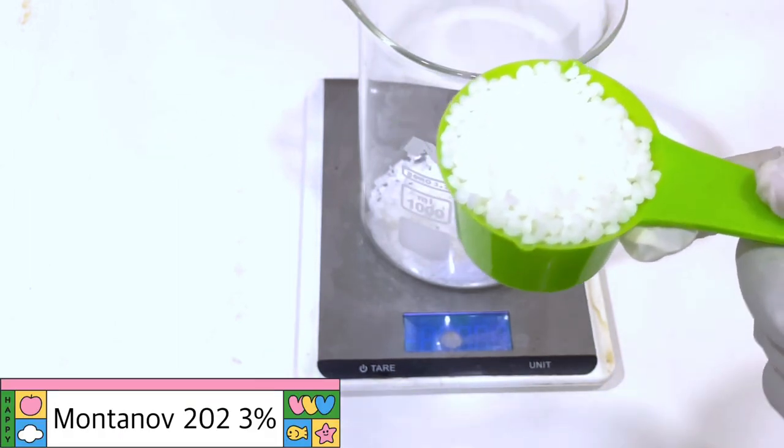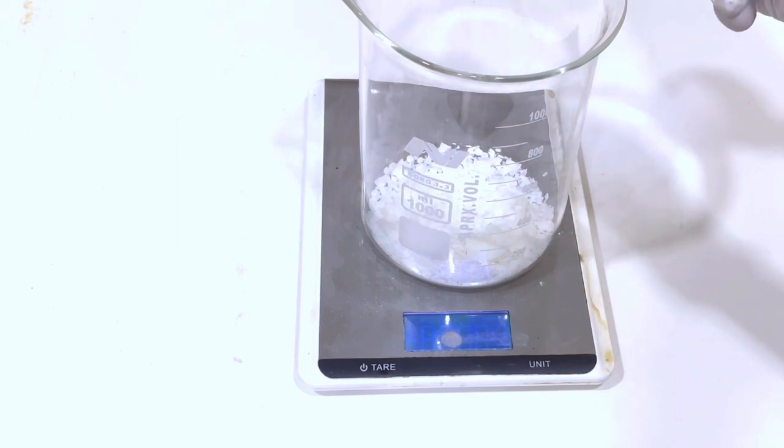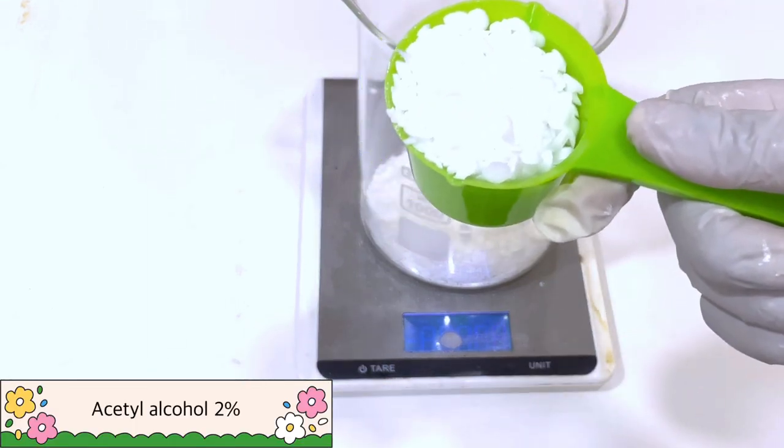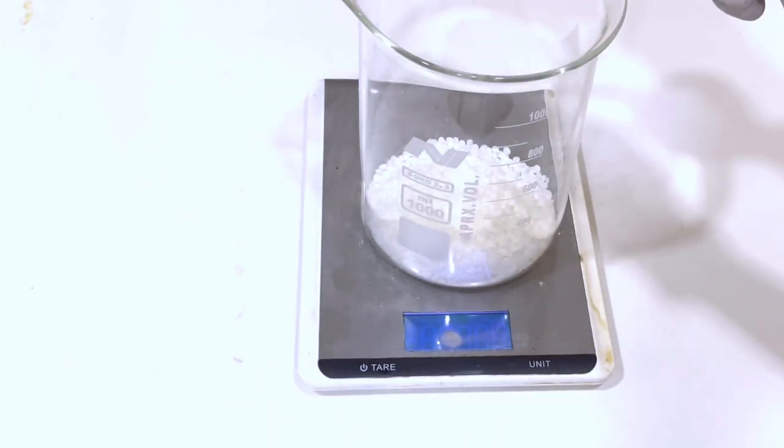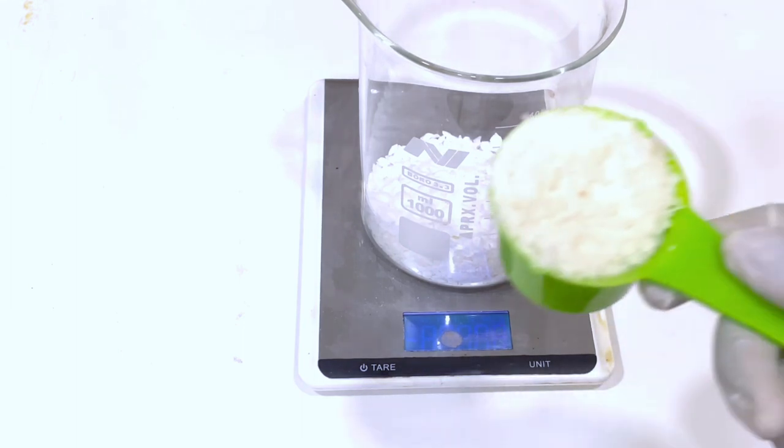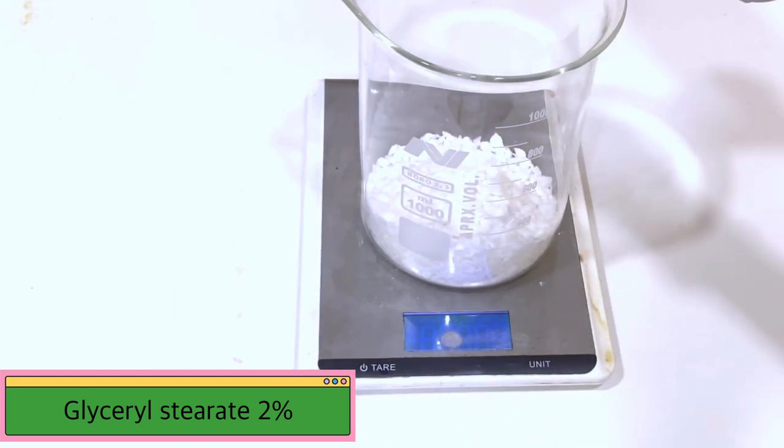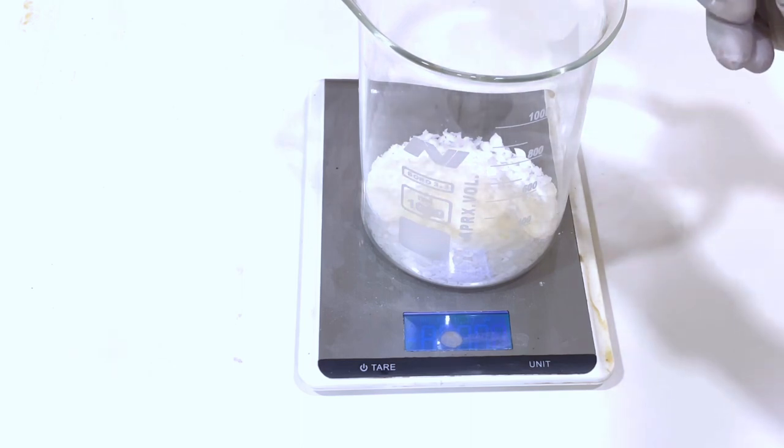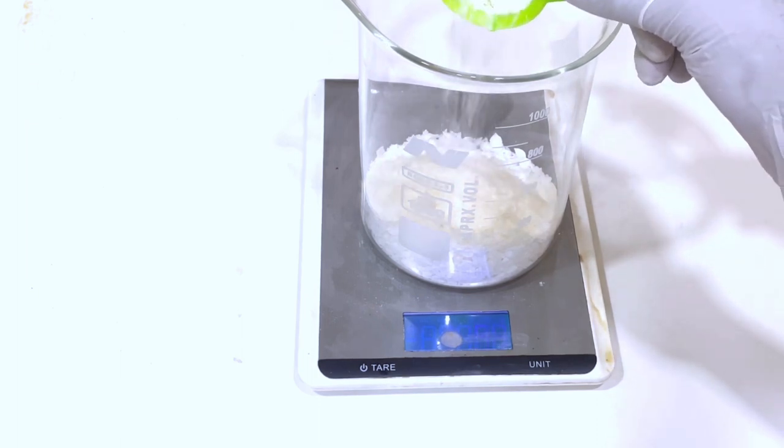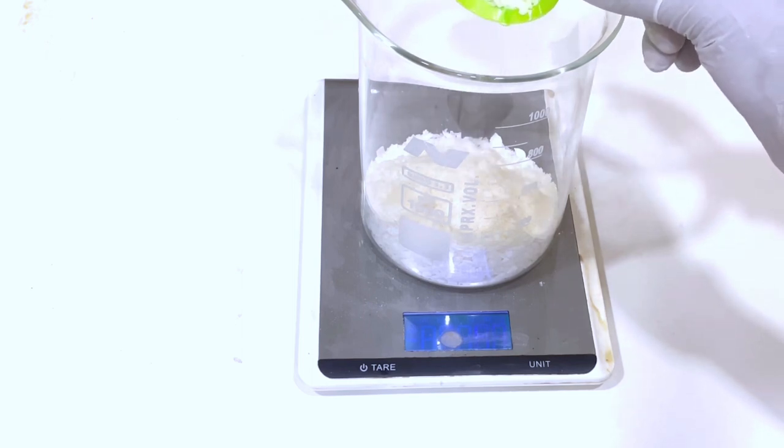We're also going to be using Montanov 202 as our main emulsifier. If you're looking for a natural emulsifier, Montanov 202 is a good one. It is an oil and water emulsifier. We're also using cetyl alcohol, which is also a thickener in this product to help stabilize it and moisturize your skin because it has emollient properties that help soften the skin and seal in moisture. When we get all the hydration from our humectants, we need these ingredients to lock in this moisture. We're also using glyceryl stearate, which is also used here as a skin conditioning ingredient. It also has emollient properties that will help to lock in moisture and soften your skin as well.